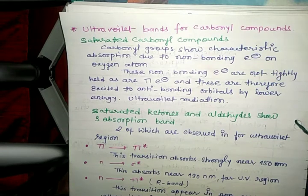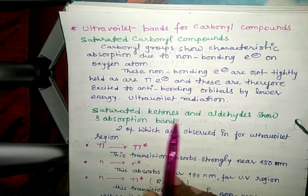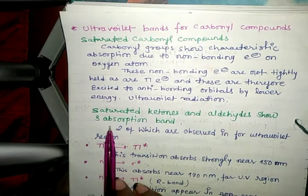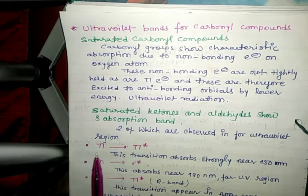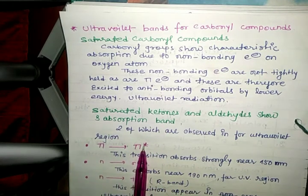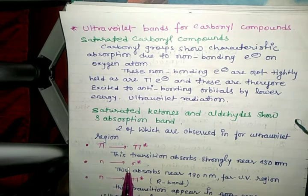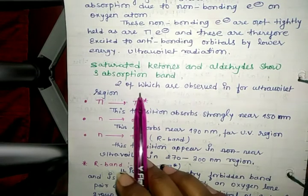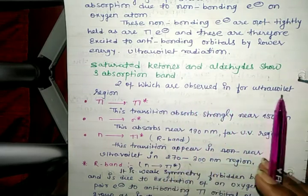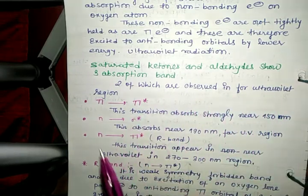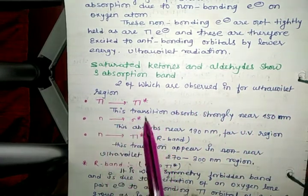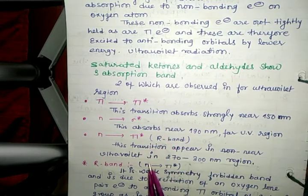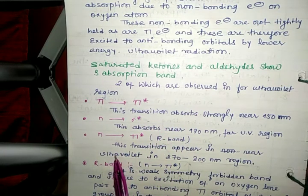Saturated carbonyl compounds include ketones and aldehydes, which show three absorption bands: pi to pi star, n to sigma star, and n to pi star. Two of these are observed in the ultraviolet region.